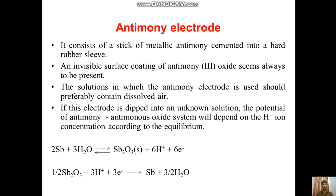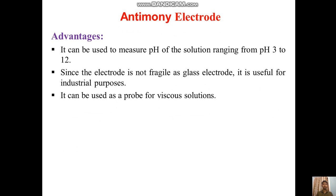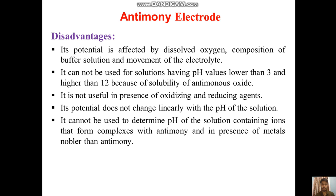The equilibrium reaction is shown here. The antimony electrode can be used to measure the pH of solutions ranging from 3 to 12. Since the electrode is not as fragile as a glass electrode, it is useful for industrial purposes, and it can be used as a probe for viscous solutions.